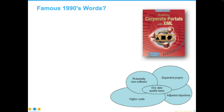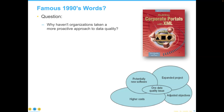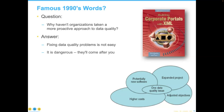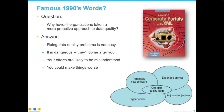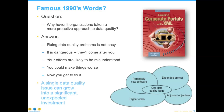I wrote a book back in the 1990s with Guy Finkelstein that tried to address why more organizations haven't taken a proactive approach. The answer was practically quite complicated — fixing these problems is not an easy task. The tools help, but it also requires understanding the context. It's kind of dangerous as soon as you start putting your hand up and saying there are data quality problems here — people will come after you, your efforts are not likely to be understood at first, you could make things worse, and since you've said 'data' three times, now you're the data expert and you get to fix it. A single data quality problem can grow into a very significant, unexpected investment.